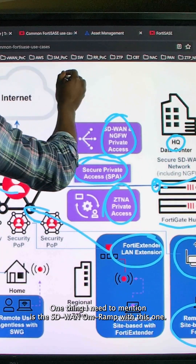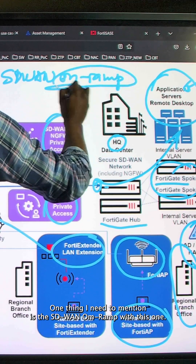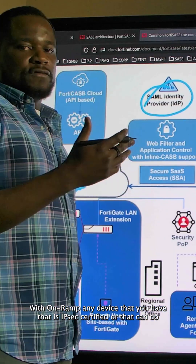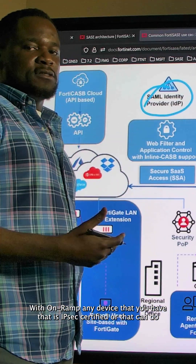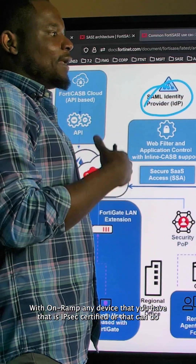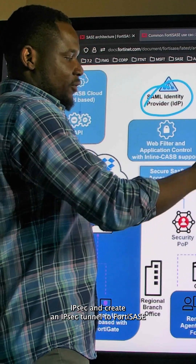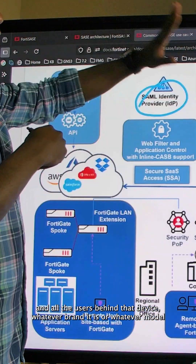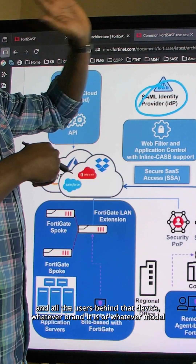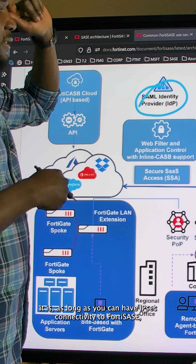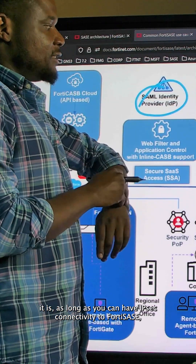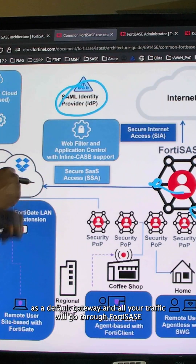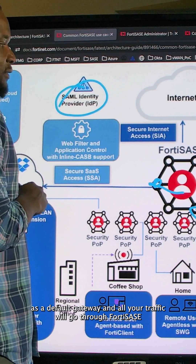One thing I need to mention is the SD-WAN on-ramp. With on-ramp, any device that you have that is IPsec certified or that can do IPsec can create an IPsec tunnel to FortiSASE. All the users behind that device — whatever brand it is, whatever model it is — as long as you can have IPsec connectivity to FortiSASE, it's going to have FortiSASE as a default gateway and all your traffic will go through FortiSASE.